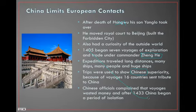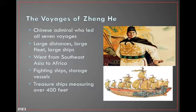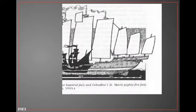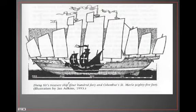Just like in American politics, 28 years later people said this is a waste of money — like in America we've cut on NASA because it's a waste of money. They cut the exploration. Zheng He was a Chinese admiral who led all the voyages from Southeast Asia to Africa, with fighting ships and storage vessels. He had one treasure ship that measured over 400 feet — just to give you an idea. That's the Santa Maria next to his boat. Notice the difference.